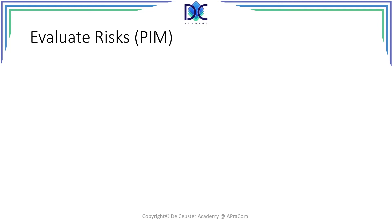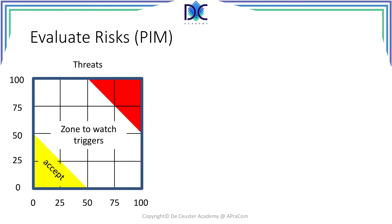Let's start to evaluate the risks. We identify the probability, we identify the impact, and now we have the probability and impact matrix. Here we have it for threats. On the bottom part — the yellow zone — all the threats positioned there we will simply accept. They have too low an impact and too low a probability to invest in a risk response.